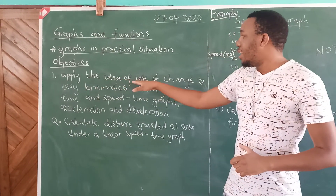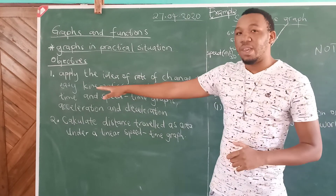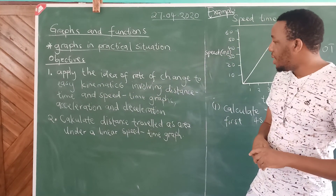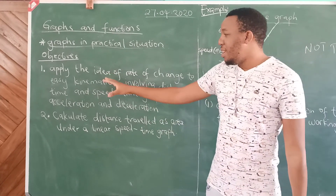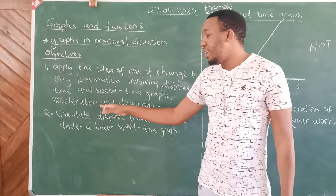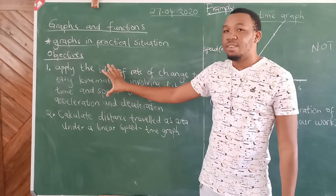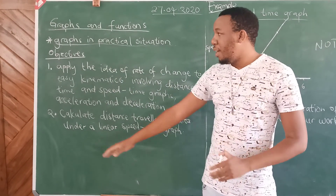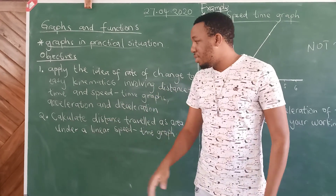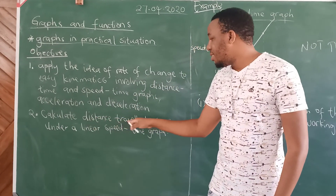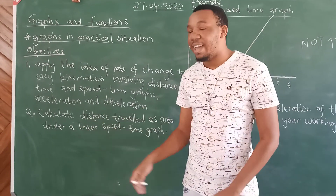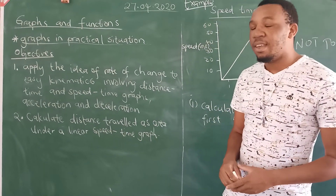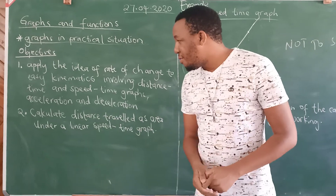This is actually an underlying topic. The objectives are: one, apply the idea of rate of change to easy kinematics involving distance, time, and speed — basically focused on acceleration and deceleration, and that is what we're going to look at first. The second objective is to calculate the distance traveled as an area under a speed-time graph.